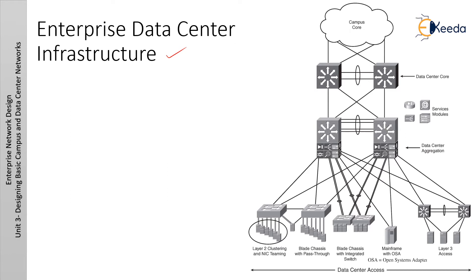Regarding Enterprise Data Center Infrastructure, this diagram covers all the things like Data Center Core, Data Center Aggregation and Campus Core Layer, and Data Center Access. A typical large enterprise data center infrastructure design is shown here. The design follows the Cisco multi-layer infrastructure architecture including core, aggregation, and the access layer.